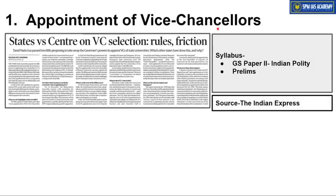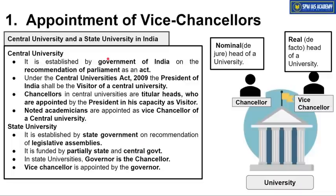The first article is about appointment of vice chancellors in state universities, important from GS Paper 2 Indian Polity point of view. Sabse pahle samajhte hain central aur state universities ke beech ka antar. Central universities — jaise ki aap naam se hi samajh rahe hain — they are established by the Government of India as per a law passed by Parliament. Central universities ko regulate karne ke liye 2009 mein Central Universities Act pass kiya gaya. Is kanoon ke hisaab se the President of India was made visitor of a central university.